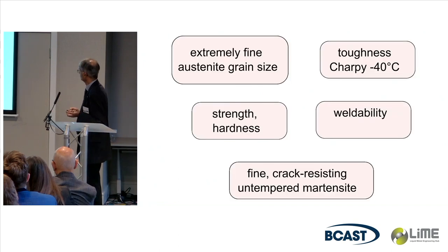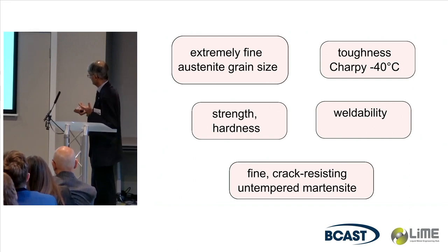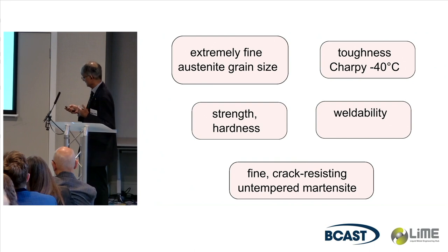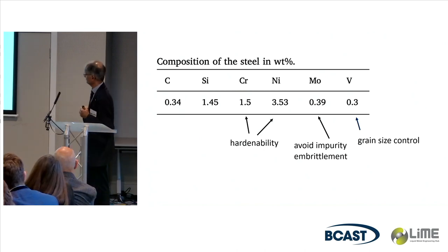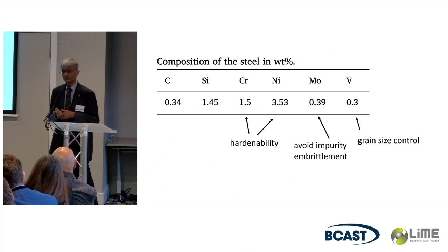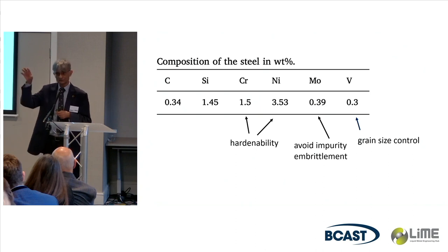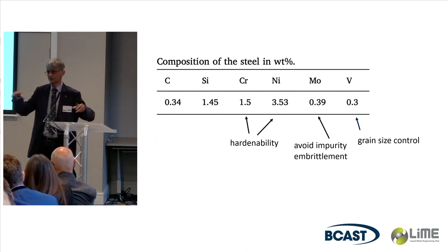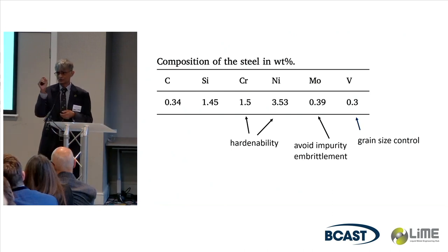How do I make very small austenite grains? I want extremely small austenite grain size, toughness at minus 40, I want it to be strong — that means I don't want to temper it — and yet I want to be able to weld it and create very fine untampered martensite plates. This is the steel that we designed. It has a high carbon concentration and certain elements for control of the hardenability. Hardenability means that you can cool at a reasonable rate and yet get martensite. And vanadium is there to control the austenite grain size.